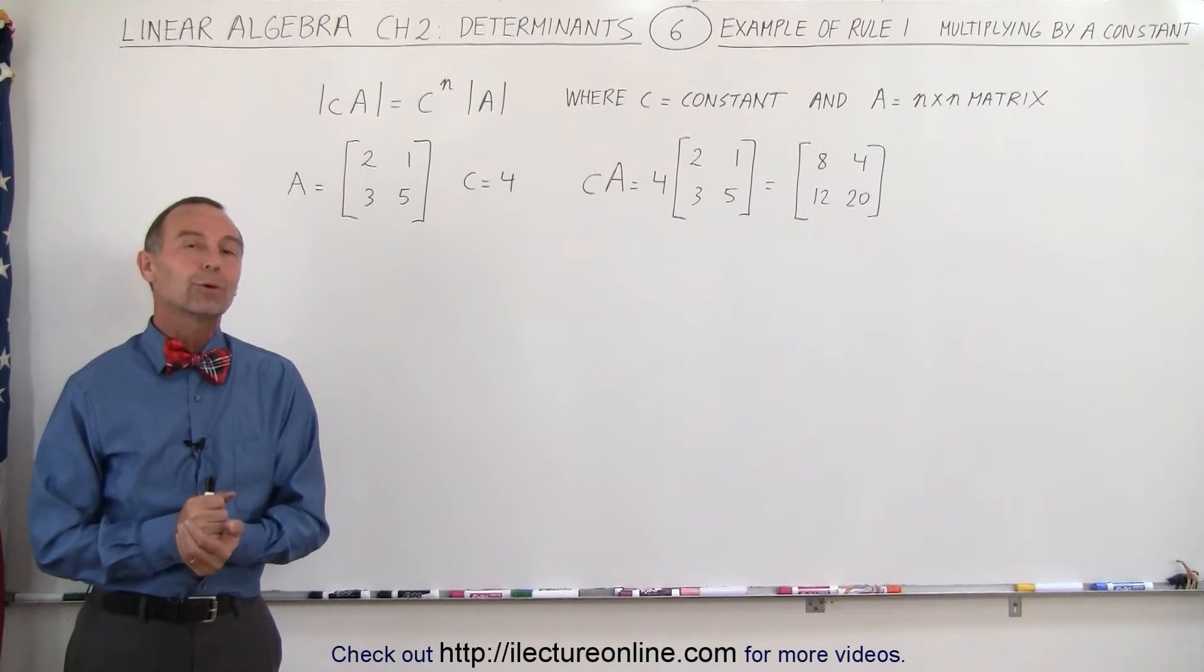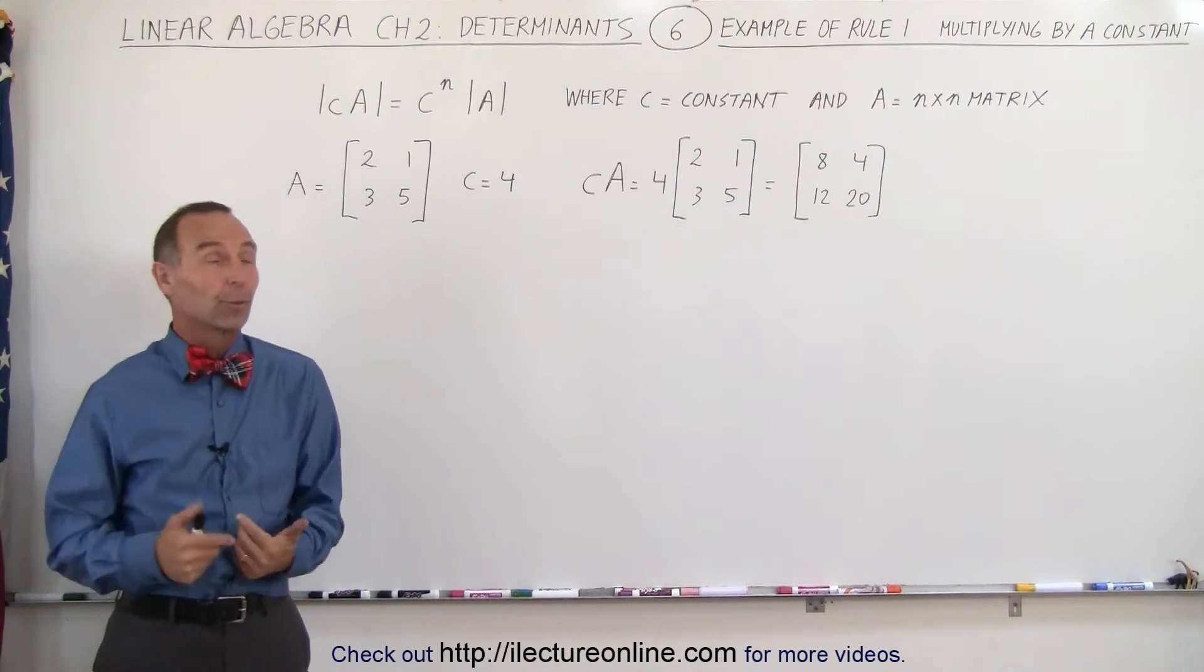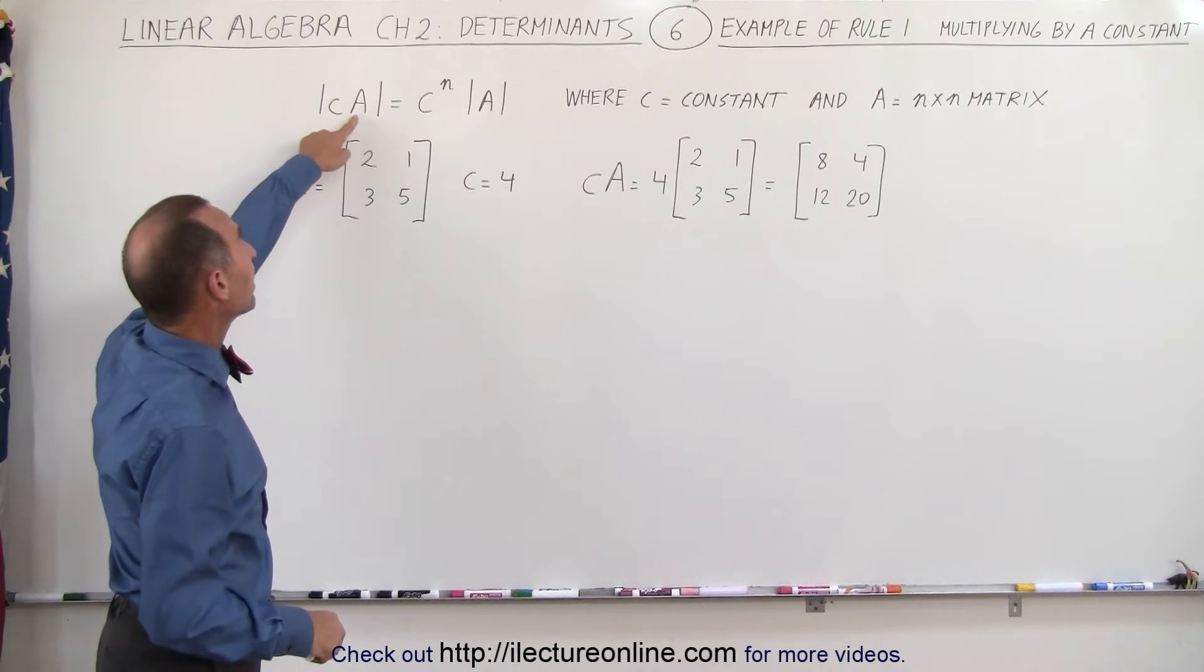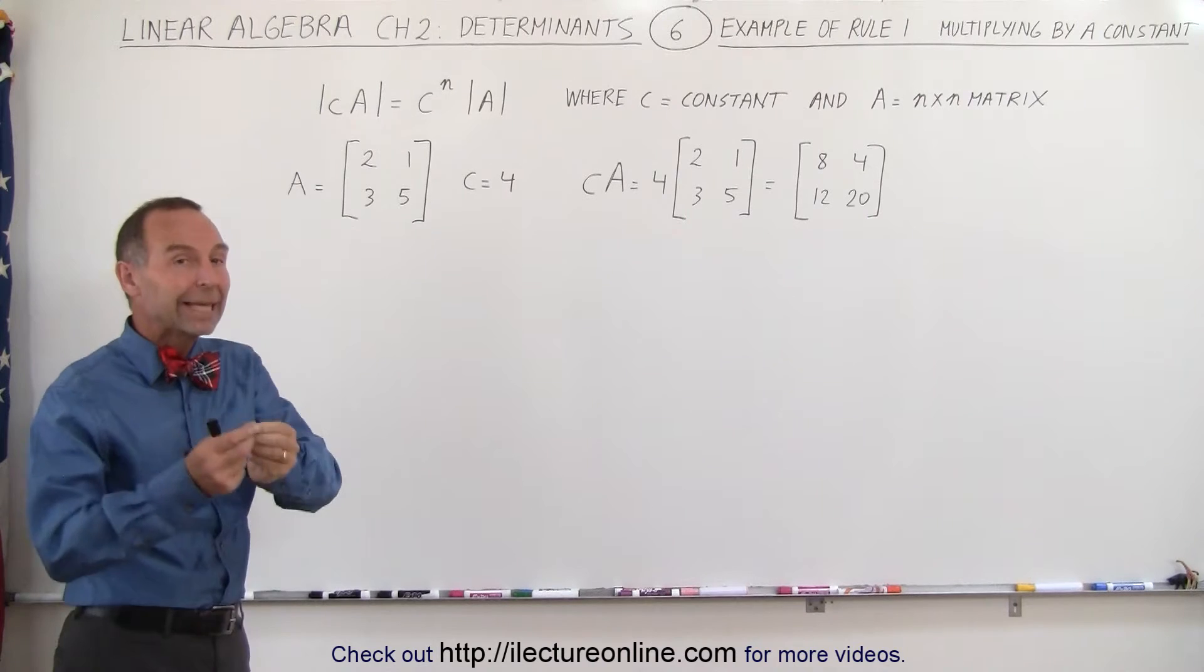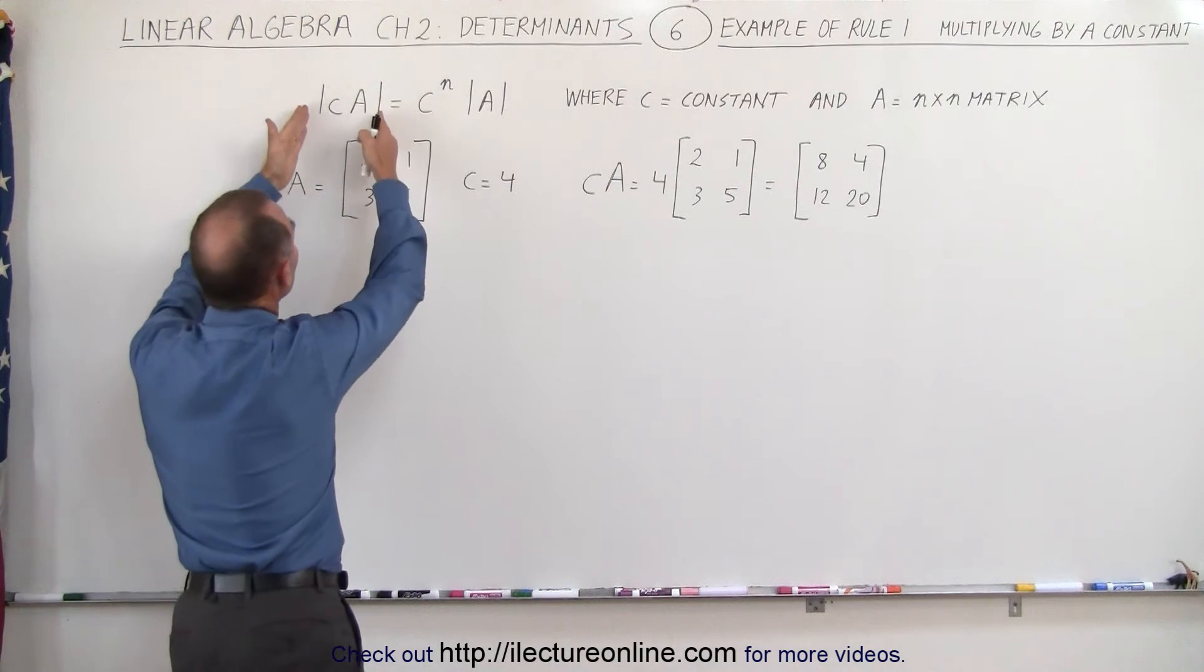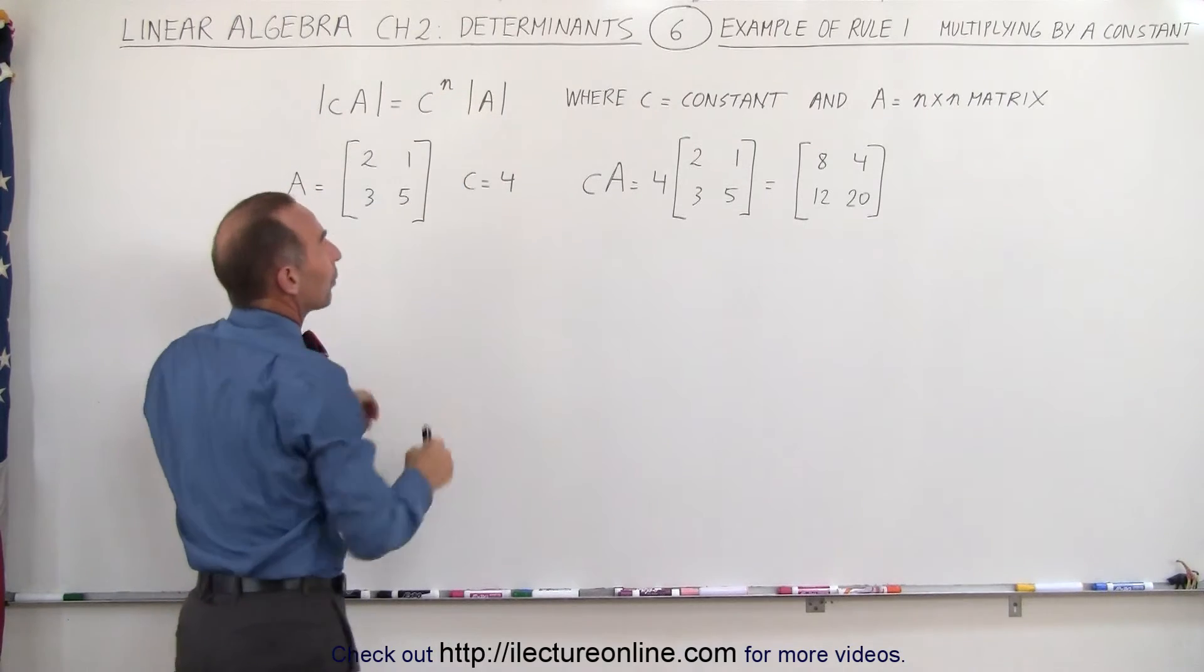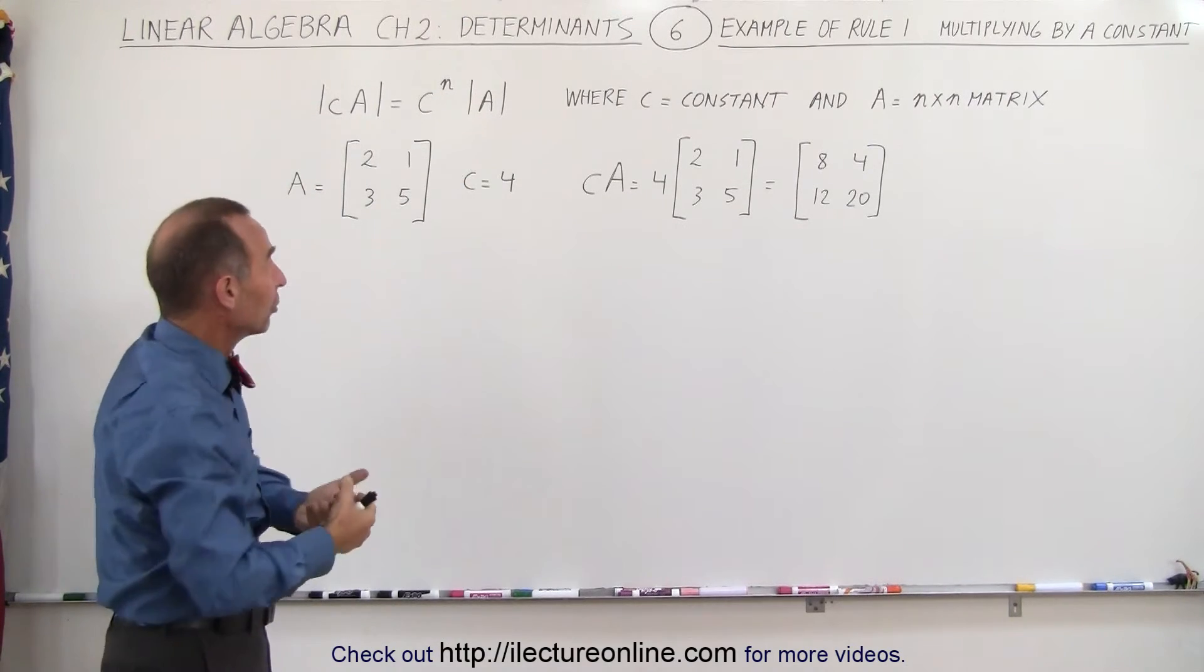Welcome to ElectronLine. Here we're going to show you an example of rule number one that says that if you have a constant C and a matrix A, when you multiply them together and then take the determinant of that, that should be equal to the constant to the nth power where n is the order of the matrix.